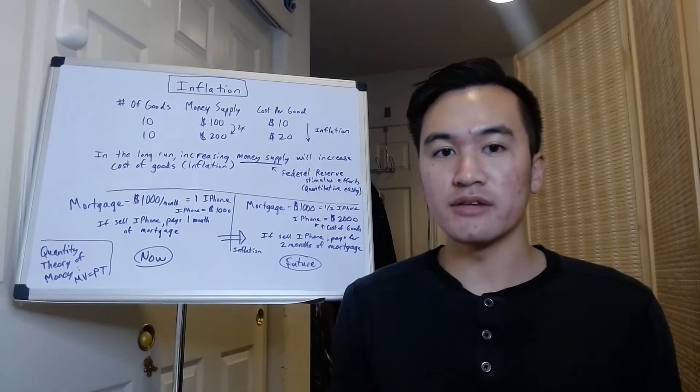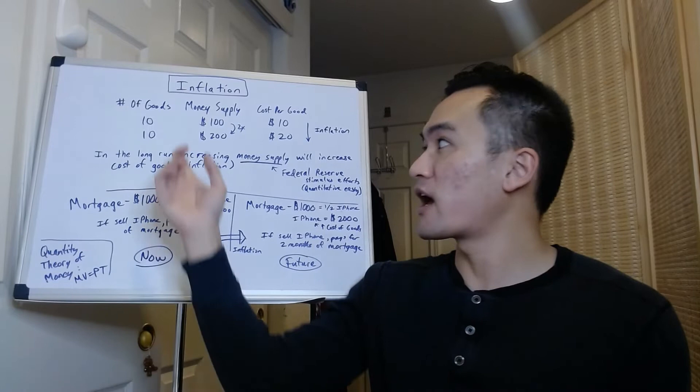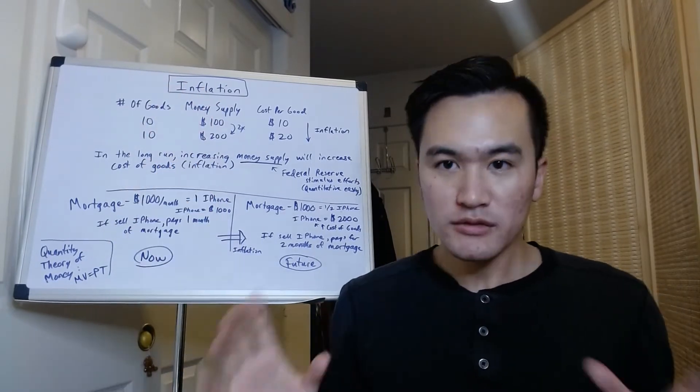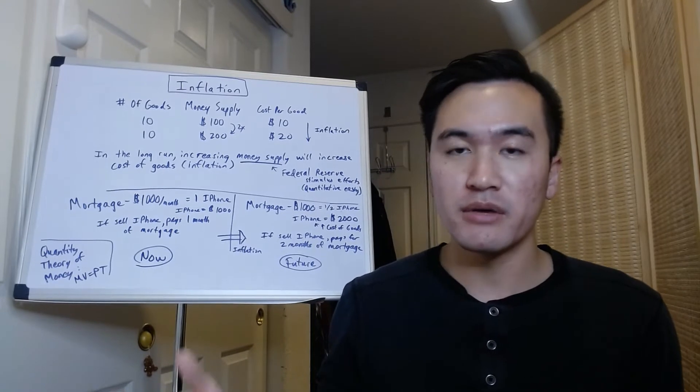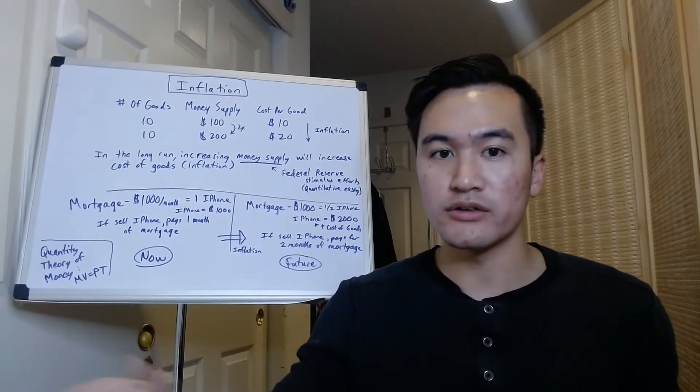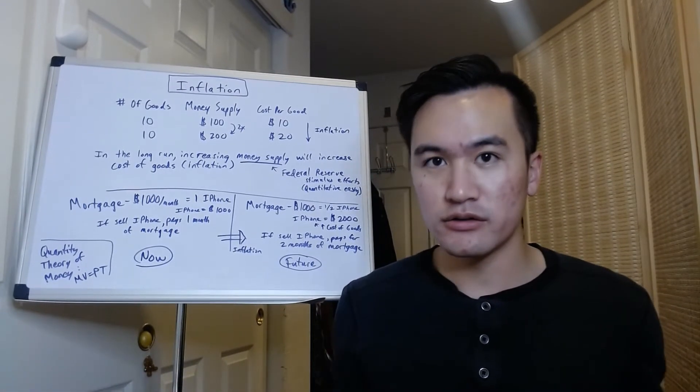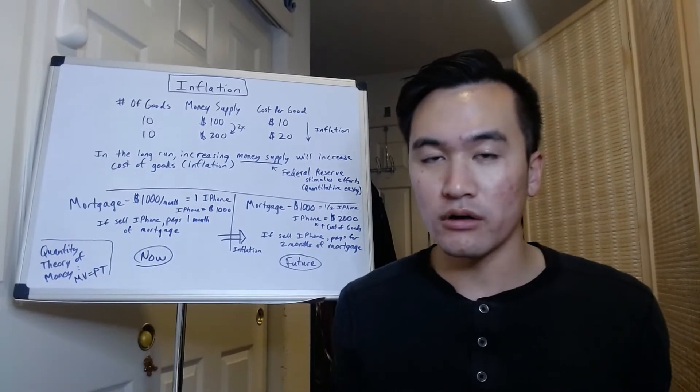If you were to take this example here, let's say you have 10 goods. Let's just assume the number of goods remains constant. If we increase the money supply from $100 in the whole economy to $200 in the whole economy.